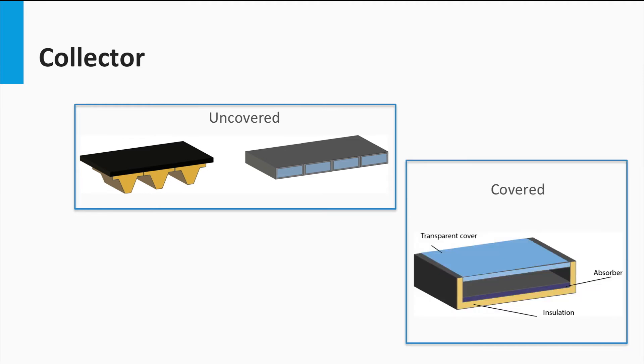Covered collectors, on the other hand, are covered by a transparent material, providing extra insulation, but also increasing reflection losses. These collectors are used for temperatures of 100 degrees Celsius.